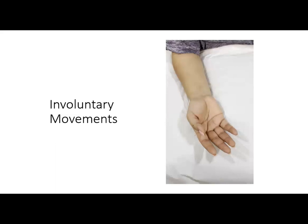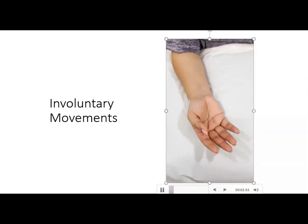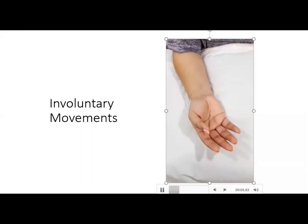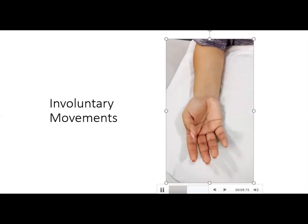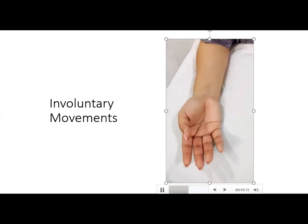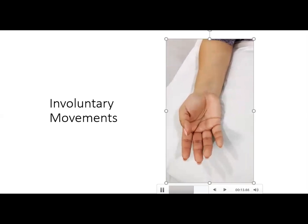Let's look at the example of a patient who was referred to the EMG lab with these involuntary movements of the right hand. We see these repetitive, almost twitchy movements of the fingers, and the more undulating type movements of the thenar and hypothenar eminence.